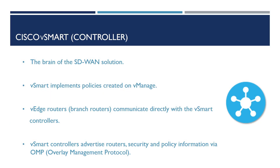Next up, the vSmart controller. This is basically the brain of the whole SD-WAN solution. It's used to implement the policies and configuration created on the vManage component and then implement them on our devices throughout the network. It's also used to communicate directly with each and every branch router using a Datagram Transport Layer Security tunnel, or DTLS for short. As the vSmart controller communicates to all branch routers, it will advertise routes and security and policy information for the routers connected to it. It does this by using a protocol called Overlay Management Protocol, or OMP for short. The vSmart appliance can be hosted locally on-premise or within the cloud.